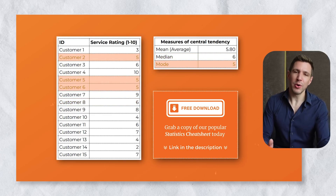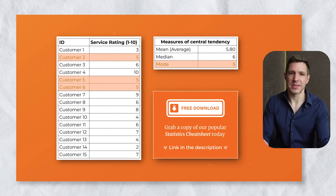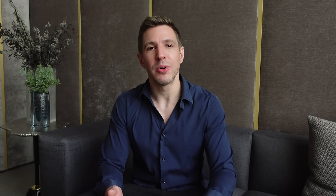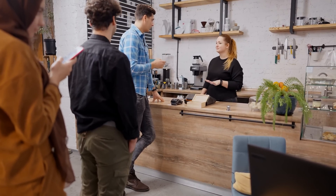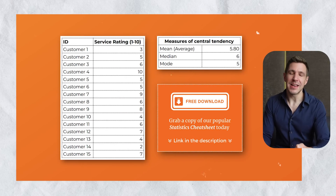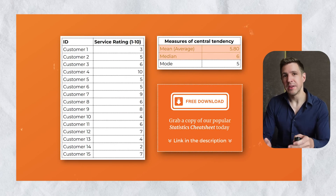Lastly, the mode of this data set is 5, as 5 is the most frequently occurring rating, appearing three times in total. So these three descriptive statistics — the mean, the median, and the mode — give us a quick overview of how customers feel about the service levels at this business. The descriptives reveal that most customers feel rather lukewarm, and there's certainly some room for improvement. From a more statistical perspective, this also means the data tend to cluster around the 5 to 6 mark, since the mean and the median are fairly close to each other.